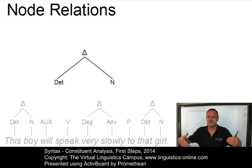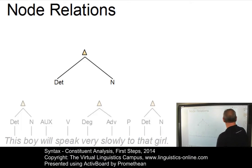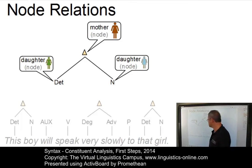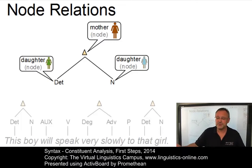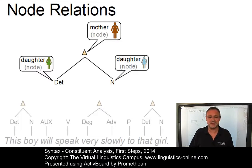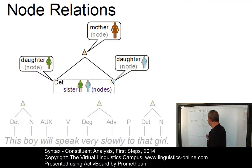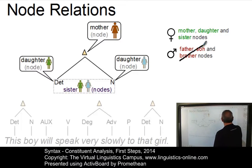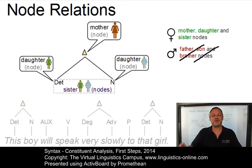Branching nodes — that is, nodes that have at least two branches — are referred to as mother nodes. The nodes below that mother node are referred to as their daughter nodes. So here we have two daughters: the determiner and the noun. And the relationship between the daughters on the same level — that is, the daughters of the same mother — is, just like in ordinary family relationships, that of sisters. So determiner and noun are sisters; they are daughters of the same mother. So in syntax, we have mothers, daughters, and sisters. We do not have fathers, sons, and brothers. But that's life. With these family labels, we can now easily address the relationships between the nodes in a tree.